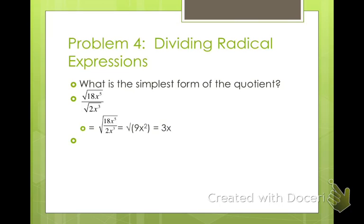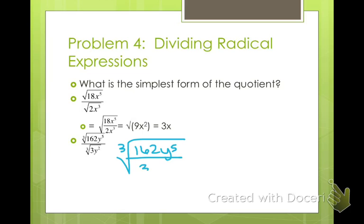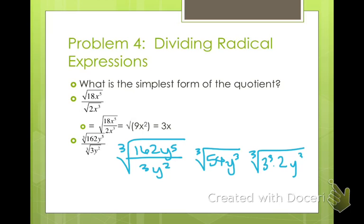Dividing is pretty simple. For the cubed root of 162y to the 5th divided by the cubed root of 3y squared: write them under the same root — 162y to the 5th over 3y squared. 162 divided by 3 is 54, and y to the 5th divided by y squared is y cubed. So we have the cubed root of 54y cubed. We already know 54 is 27 times 2, so rewrite as cubed root of 3 cubed times 2y cubed. Taking the cube roots of the perfect cubes gives 3y·∛2. Our root is 3 (odd), so no absolute values needed.